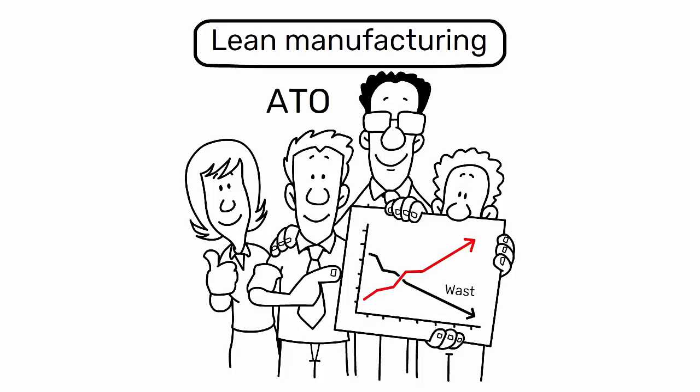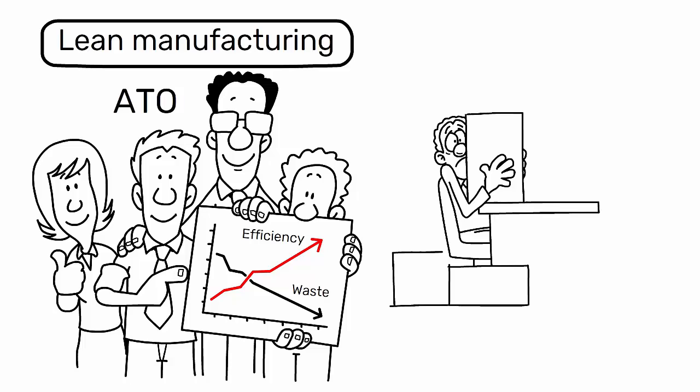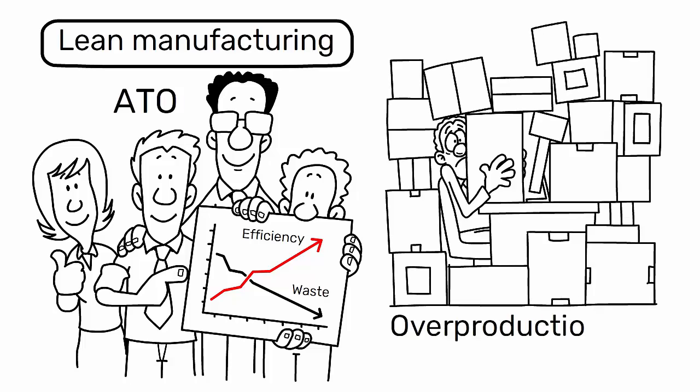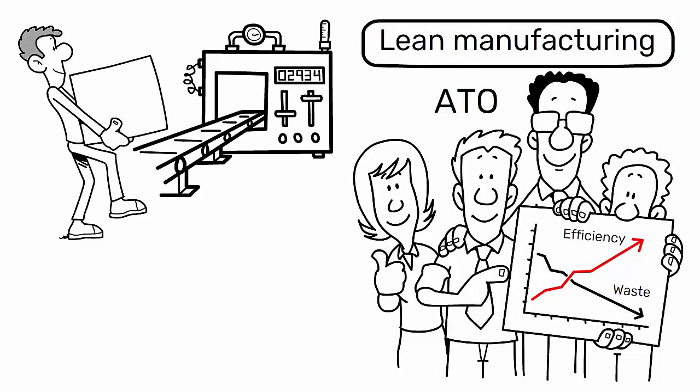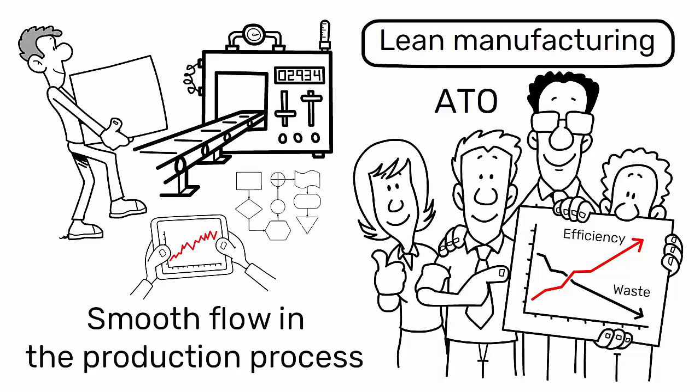In the context of lean manufacturing, ATO aligns with the principles of reducing waste and increasing efficiency. It allows for the reduction of waste associated with overproduction and excess inventory while increasing efficiency by enabling a smooth flow in the production process.